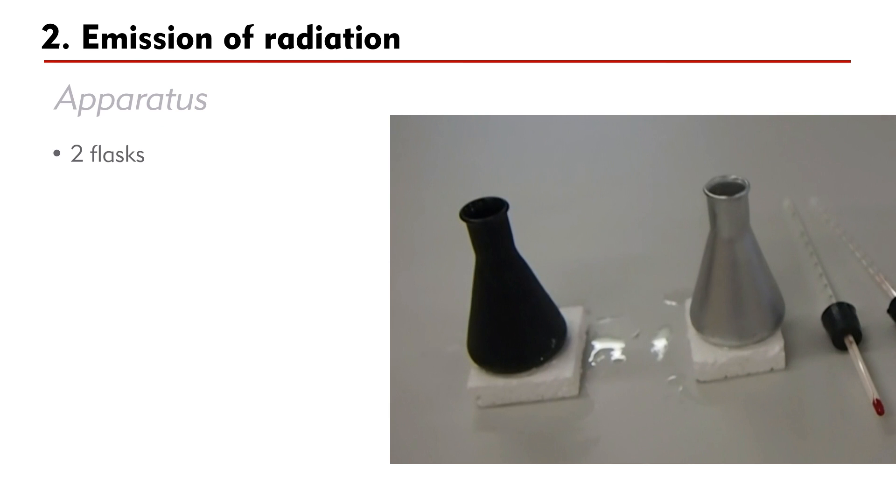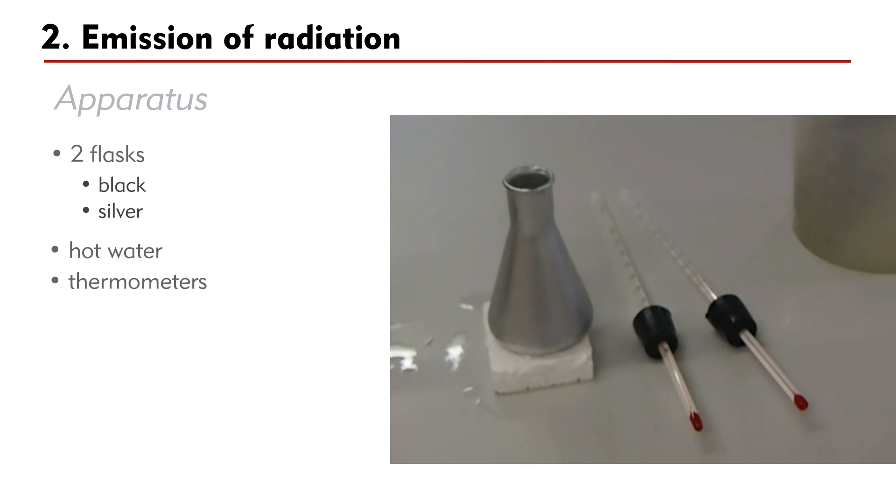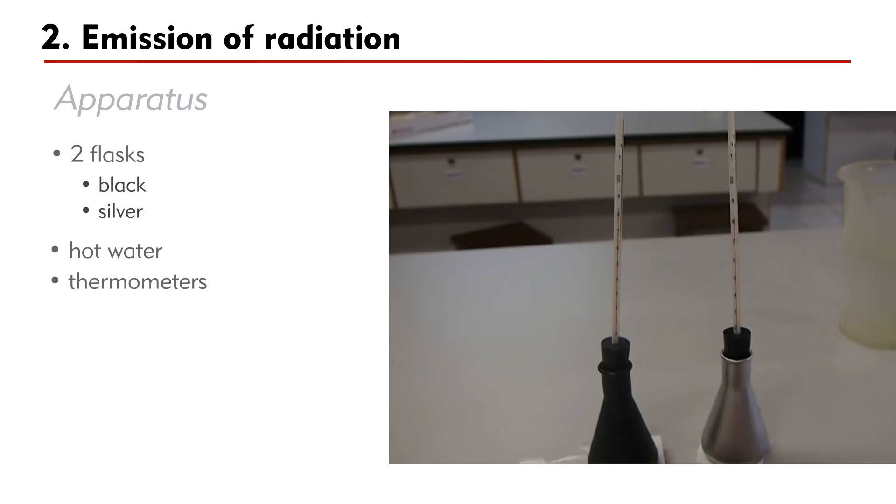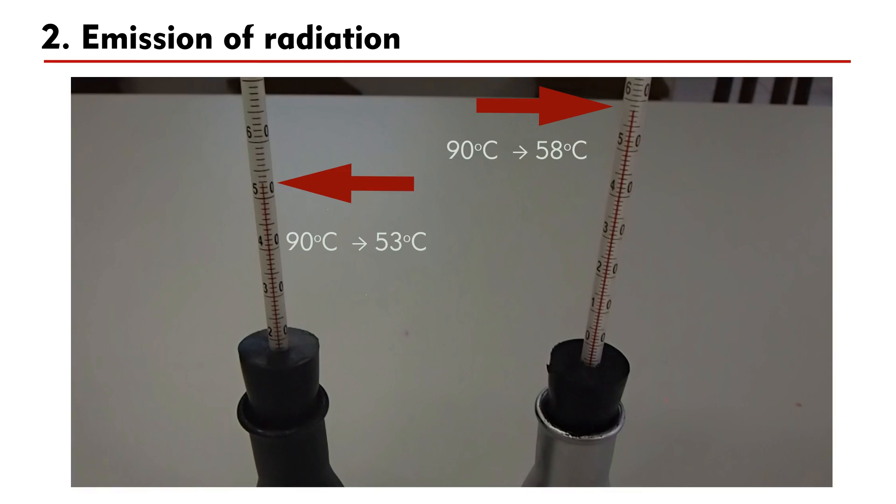The apparatus used include two flasks. One painted in black and the other in silver. Fill the flasks with the same amount of hot water. Allow the flasks to cool and record the temperature regularly. Results show that the temperature of the black flask falls more quickly.